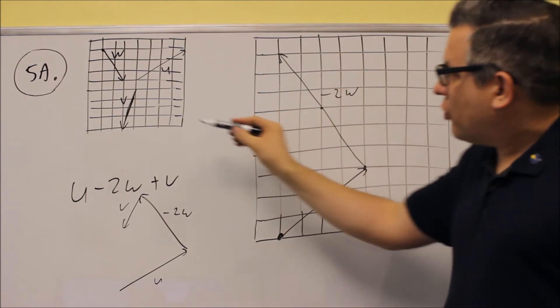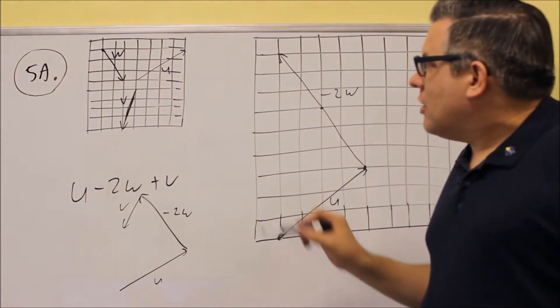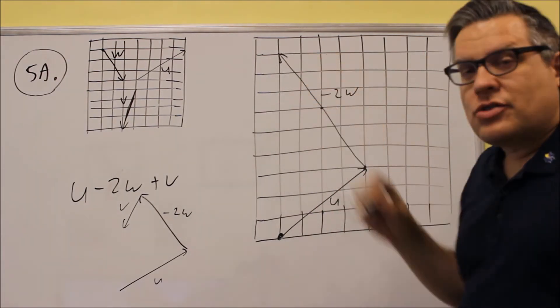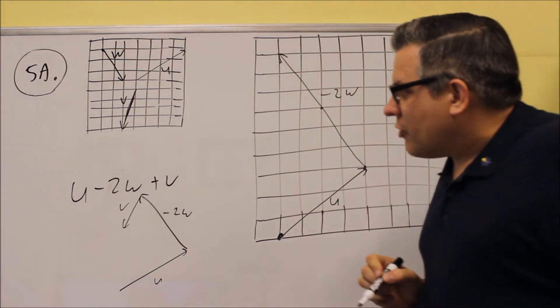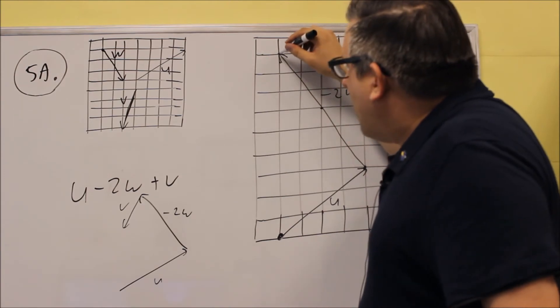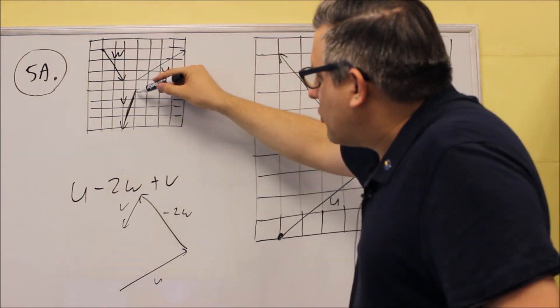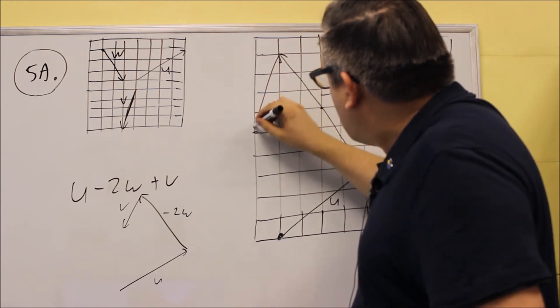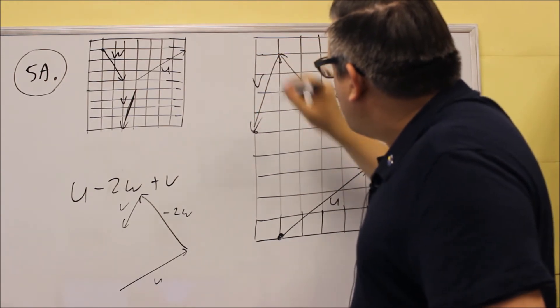Next thing we're going to do is put the V on there. And so the V, we can just move it over directly to here. Because that would be tip to tail as well. So for this, we're going to go from here. It basically goes down 4, 1 to the right. So we're going to go down 4, 1 to the right, just like this. And we're going to draw that right there. And that's the V.